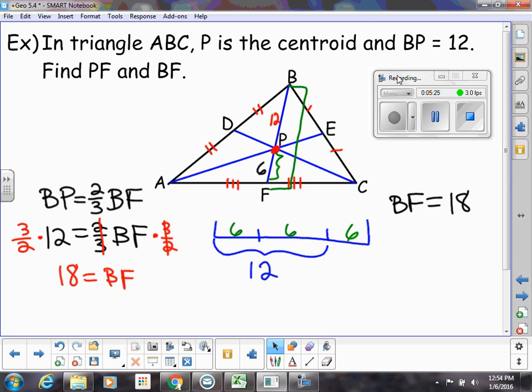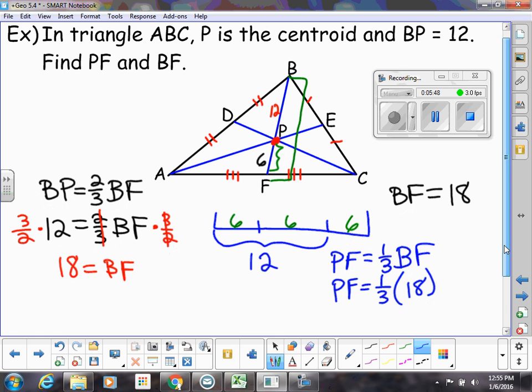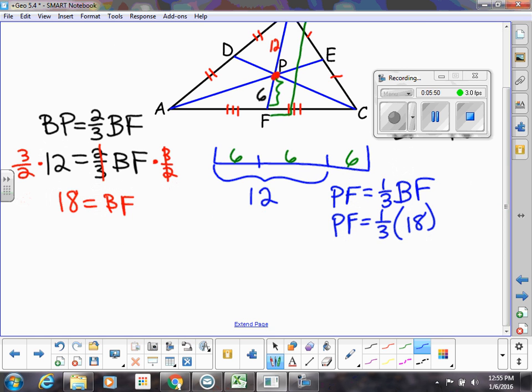So that's more of an algebraic way of going about that. And if you wanted to do PF, well, we know PF is equal to one-third of the whole median. So since we don't know PF, we would just plug in what we know. So notice we would have to know BF first. So PF is equal to one-third of 18, which is equal to six. So there's two different ways to handle that centroid concurrency theorem.